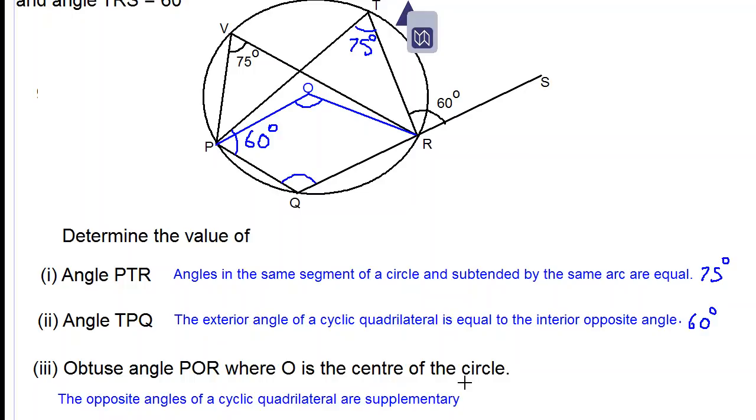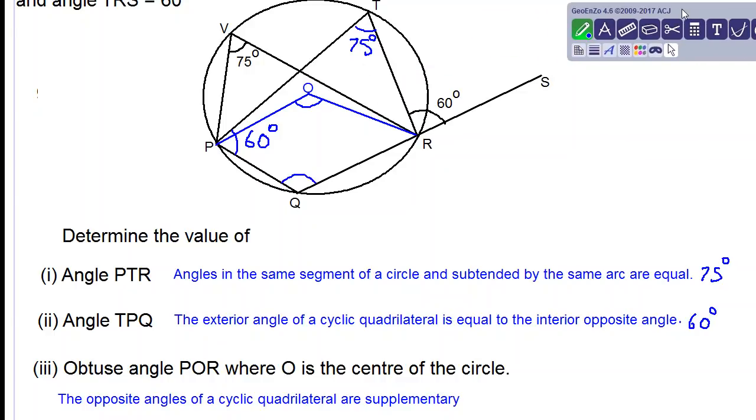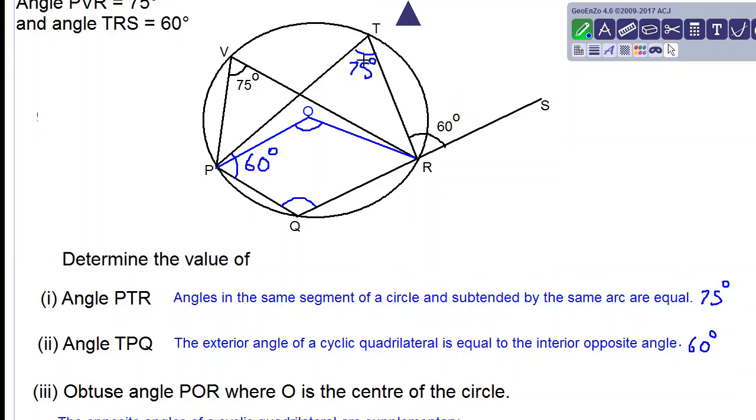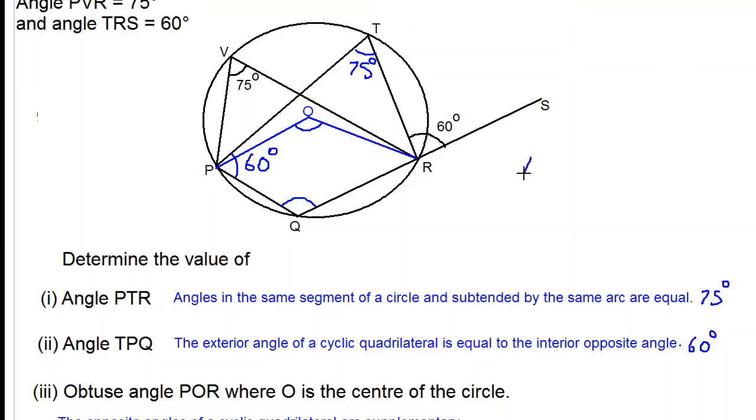What does that mean? The opposite angles of our cyclic quadrilateral are supplementary. This is our cyclic quadrilateral PTRQ and both of these angles must add up to 180 degrees. So in order to find angle Q, we just say 180 subtract 75 and we get 105 degrees. So Q is 105 degrees.